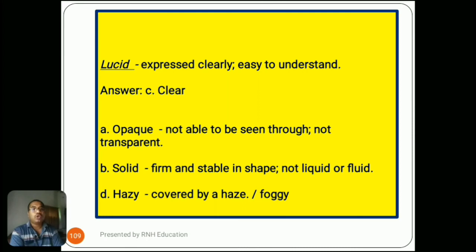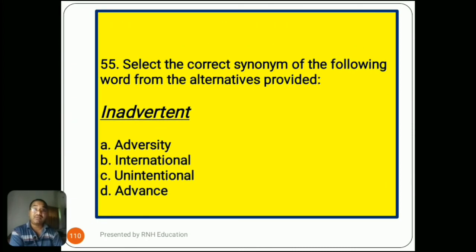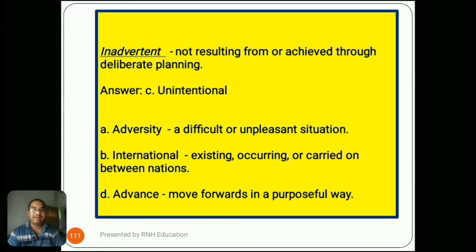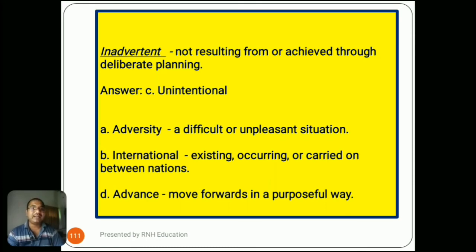Question number 55: 'Select the correct synonym — inadvertent.' Options are A) adversity, B) international, C) unintentional, D) advanced. Inadvertent means not resulting from or achieved through deliberate planning — not deliberate. The right answer is C) unintentional. Option A, adversity, means a difficult or unpleasant situation. Option B, international, means existing, occurring, or carried on between nations. Option D, advanced, means move forward in a purposeful way.